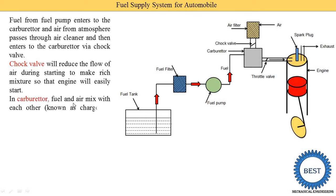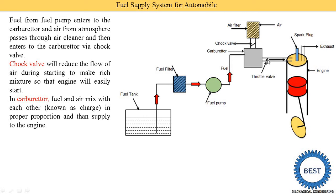In the carburetor, fuel and air mix with each other in the proper proportions, and this mixture is known as a charge. This charge is supplied to the engine. Between the carburetor and the engine, a throttle valve is provided. The throttle valve is controlled by the accelerator in both two-wheelers and four-wheelers. When we press the accelerator, the throttle valve opens and more air-fuel mixture — more charge — is supplied to the engine. Similarly, in a bike, rotating the accelerator opens the throttle valve and more fuel and air is supplied to the engine.